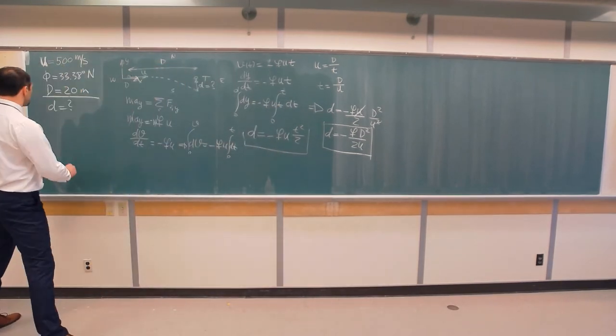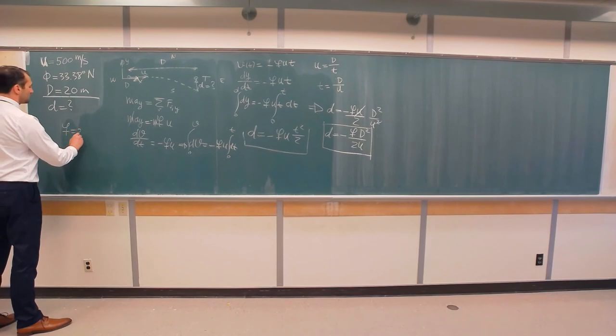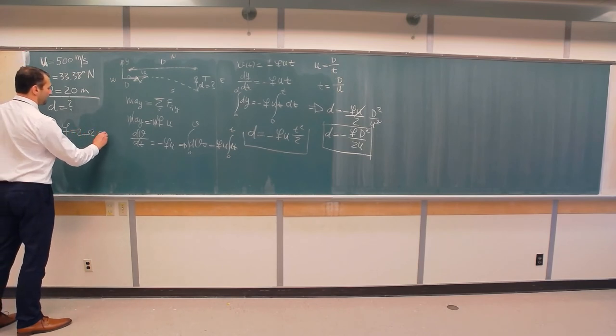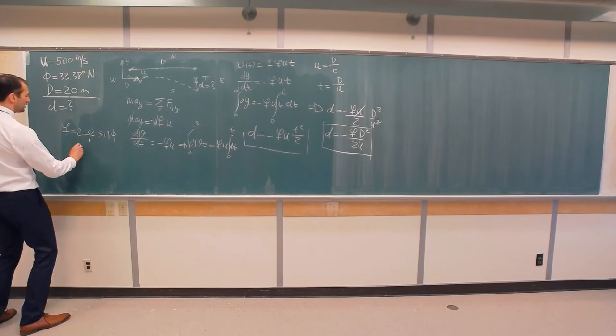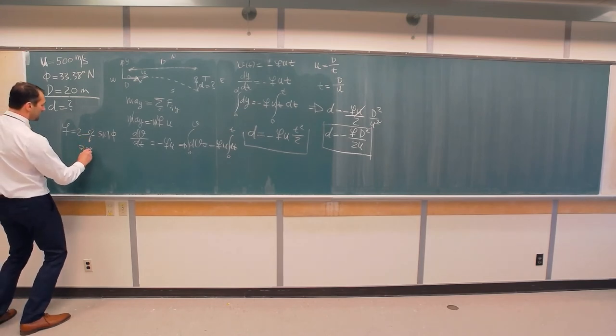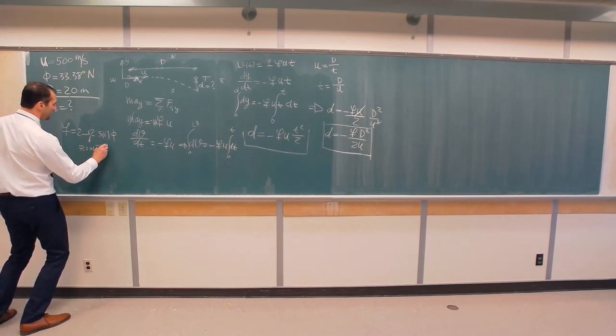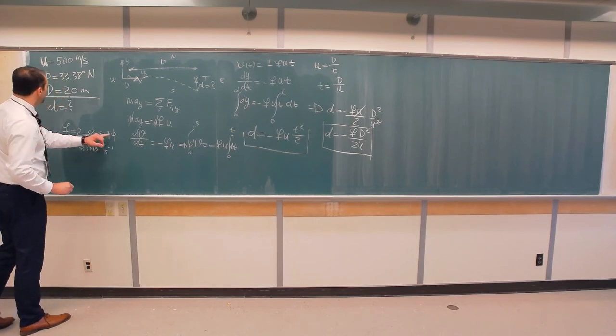I didn't write that. Of course, Coriolis parameter is 2 omega sin phi, where omega is angular velocity of the earth, approximately 7.3 times 10 to the power negative 5 second minus 1, and phi is given.